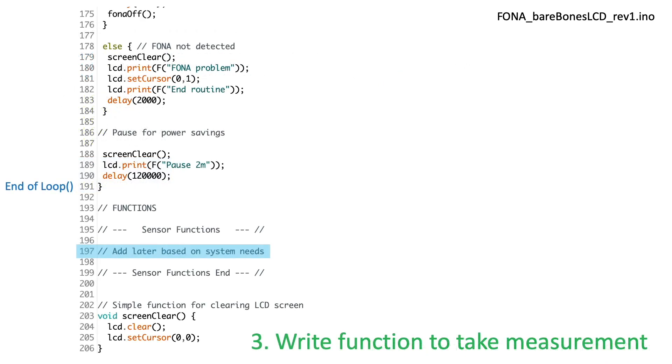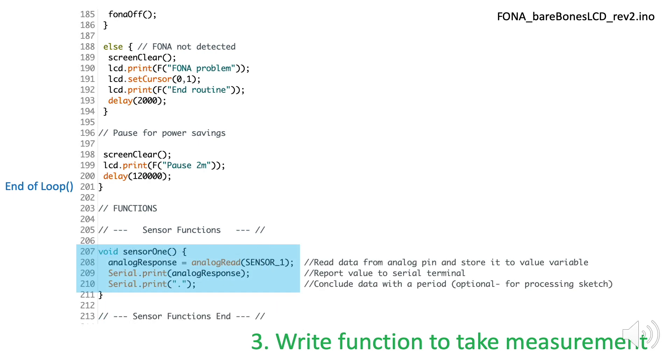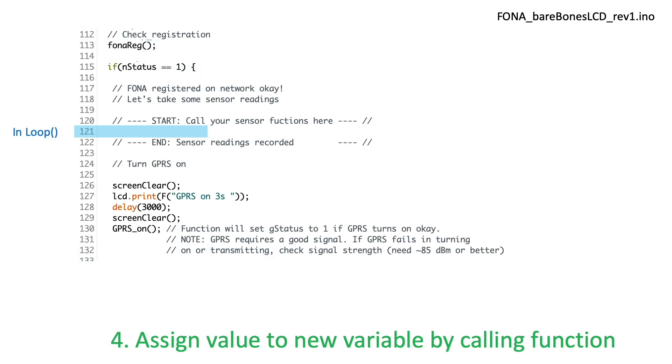Next, I need to write a function that will take a measurement using my water sensor. And here it is. I read the analog response on the sensor and store the result in my analog response variable. And within my loop, I'll call that function when needed.